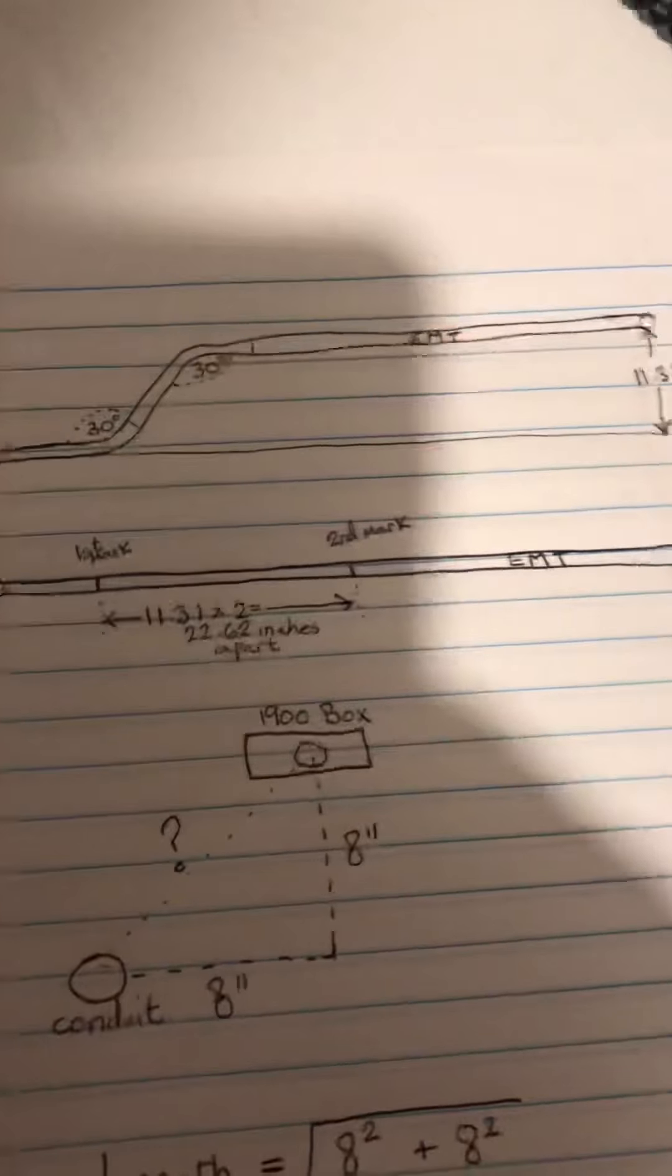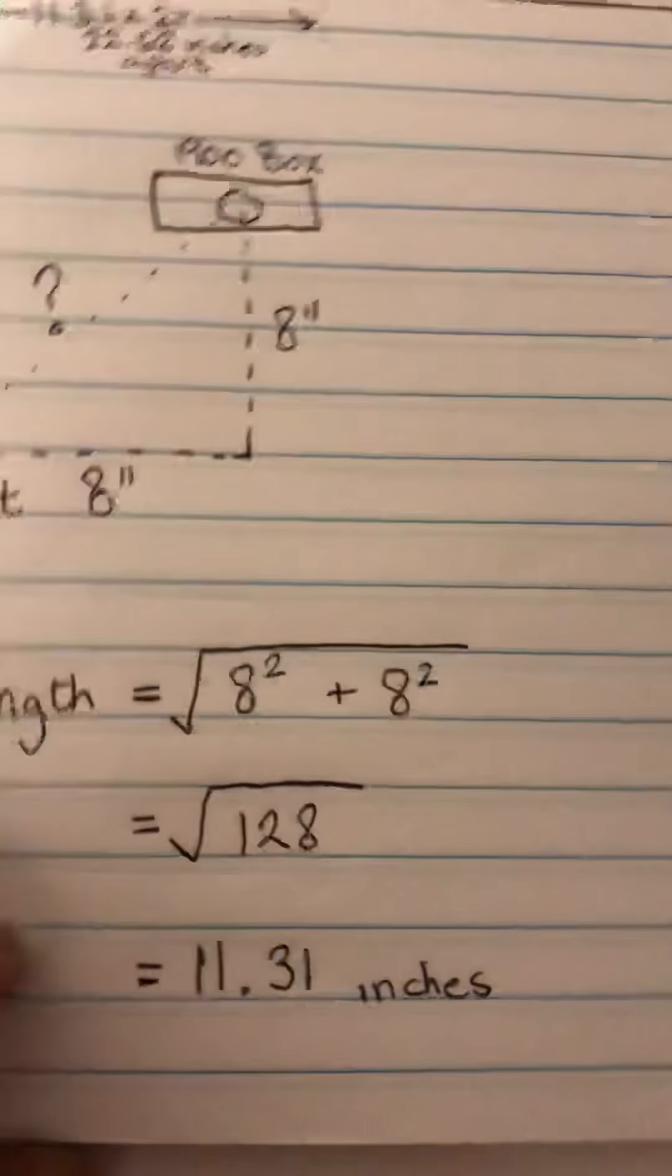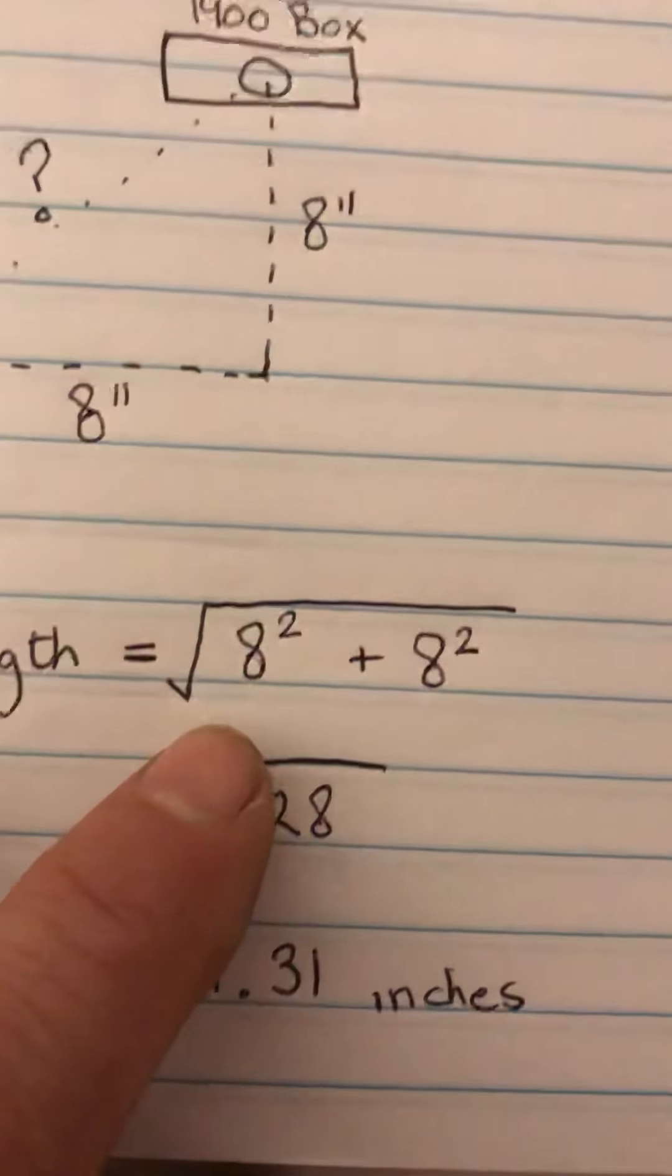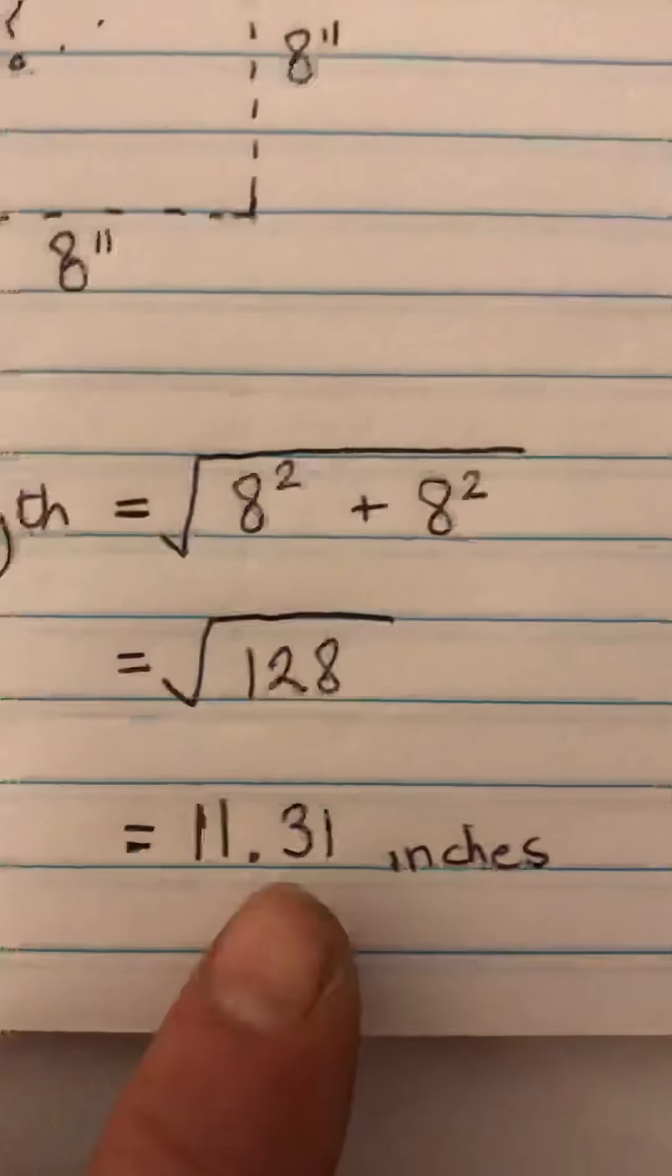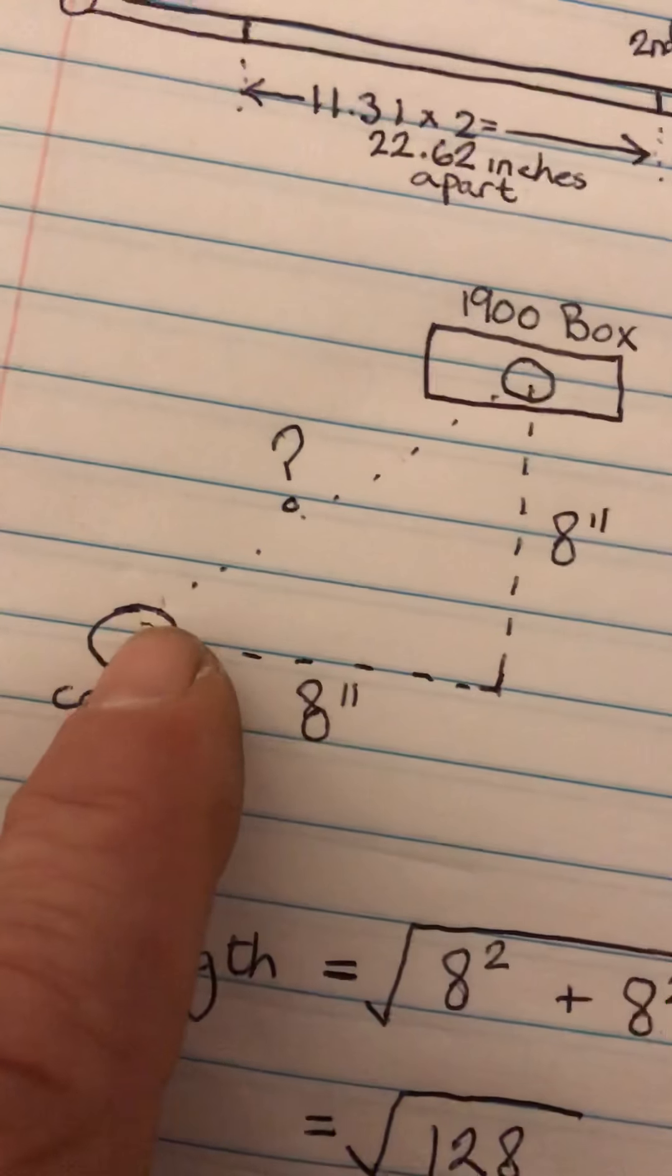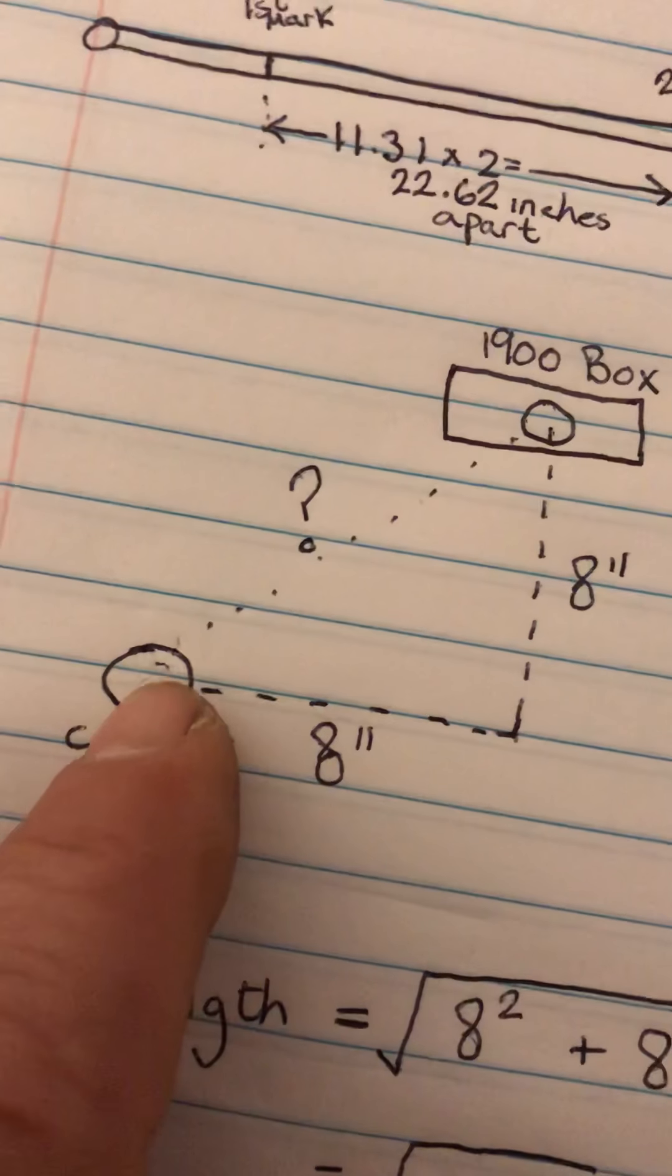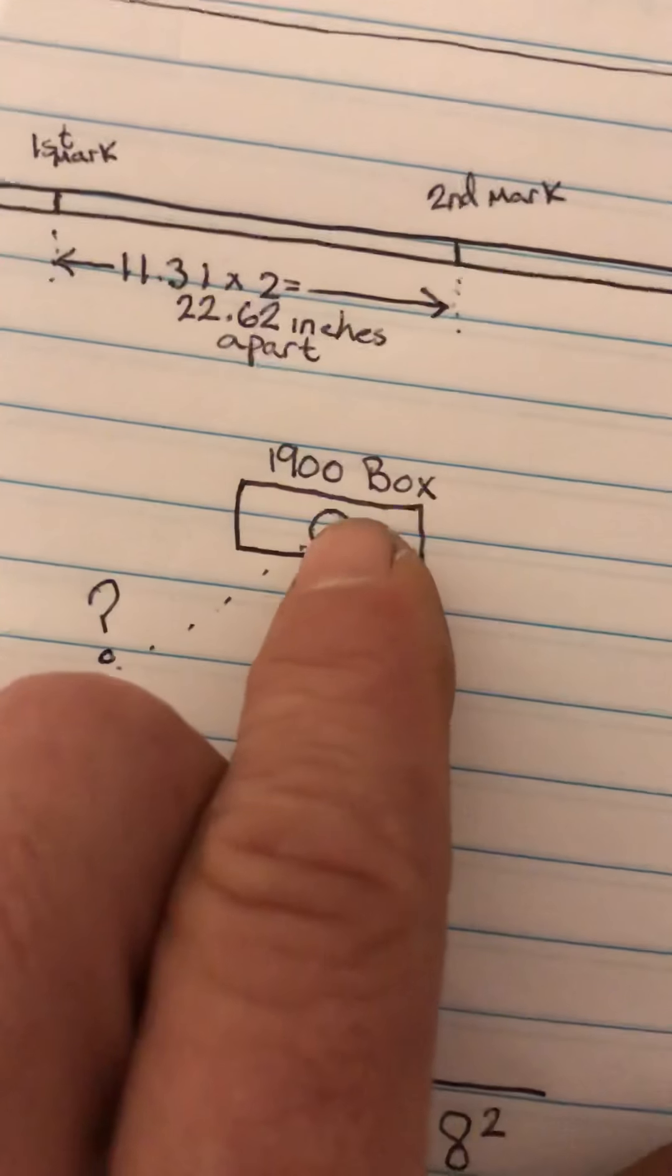What we're really looking for is the hypotenuse - that's just basic Pythagorean theorem. Eight squared plus eight squared, then the square root of that, equals 11.31 inches. So 11.31 inches is the distance between the center of this hole and the center of that hole.